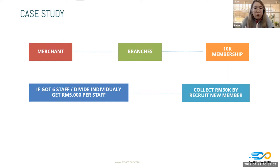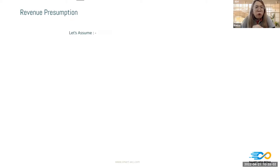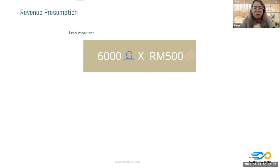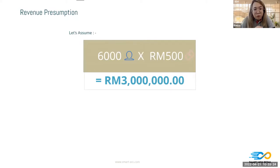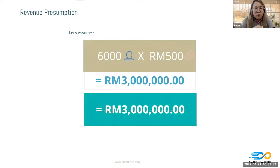What revenue can the business get? If one person spends 500 ringgit in your shop, and you recruit 6,000 members who all spend 500 ringgit, you can get 3 million ringgit in one month. After costs — let's say you slash that in half — you can still get 1.5 million ringgit, provided you have a strong database or strong member base.